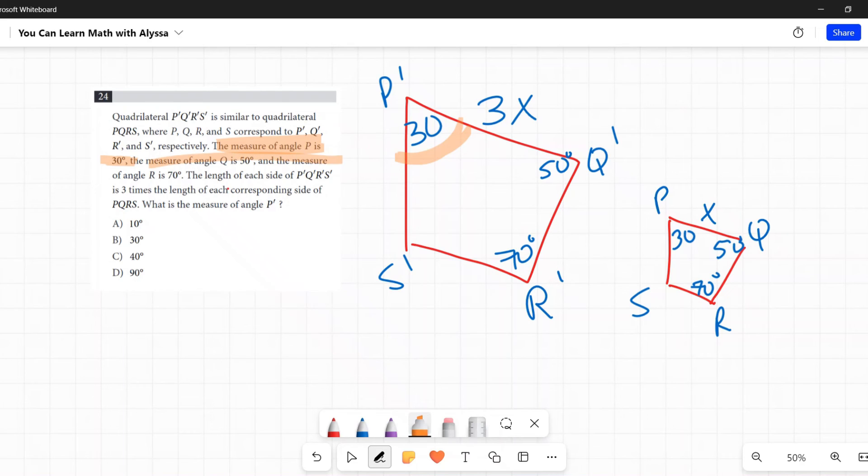So literally all this other information is extraneous and doesn't matter at all. But they're testing that you can kind of pierce through all of that verbiage and find that one critical piece of information. Since P is 30, then the corresponding angle of P prime would also be 30. B is my answer.